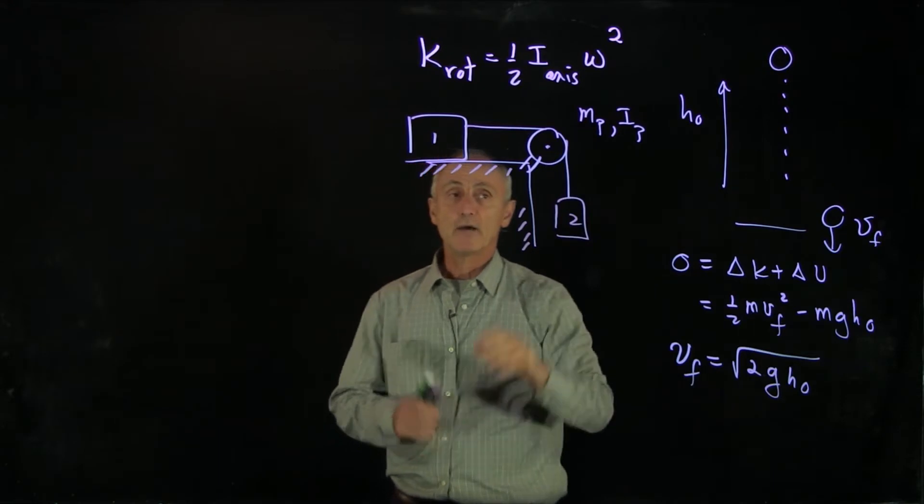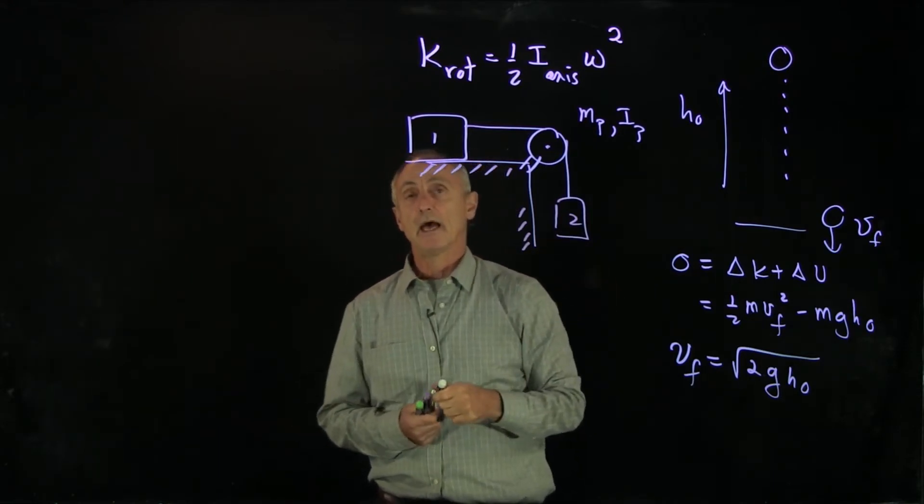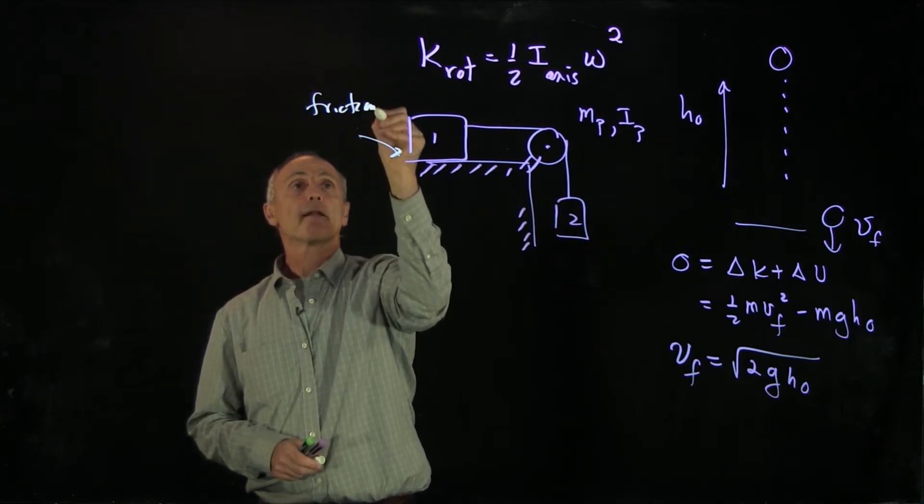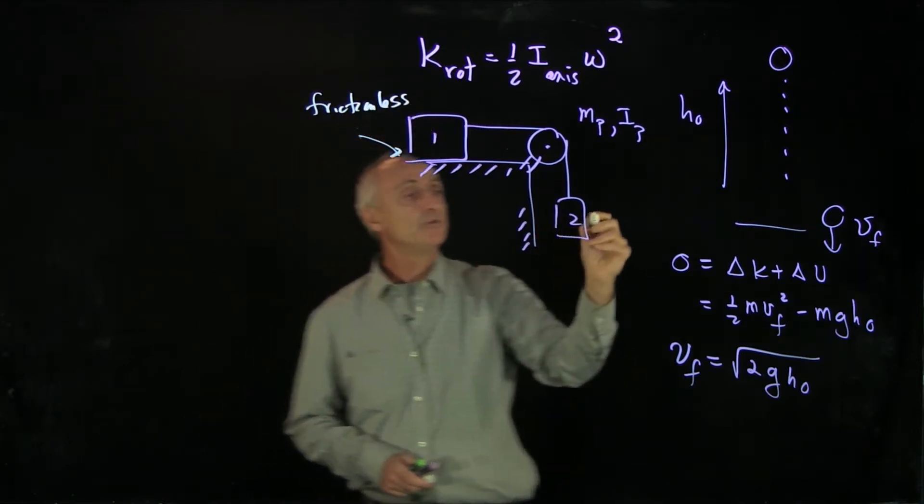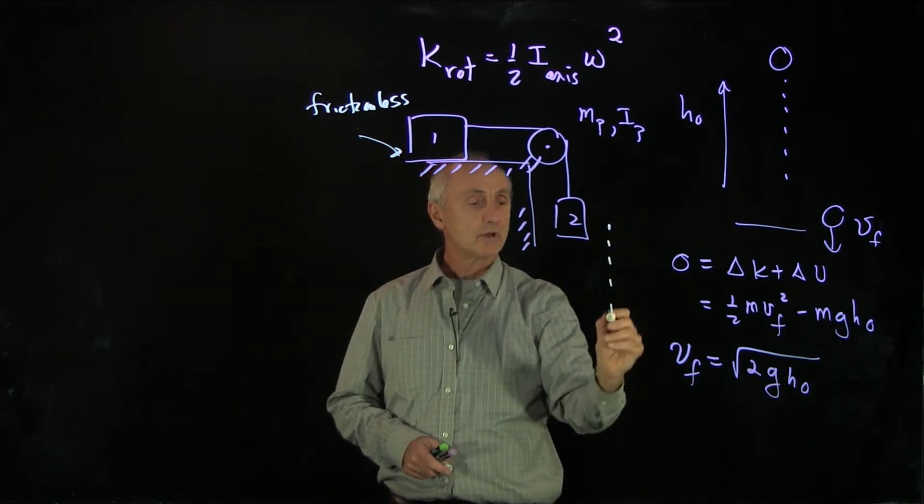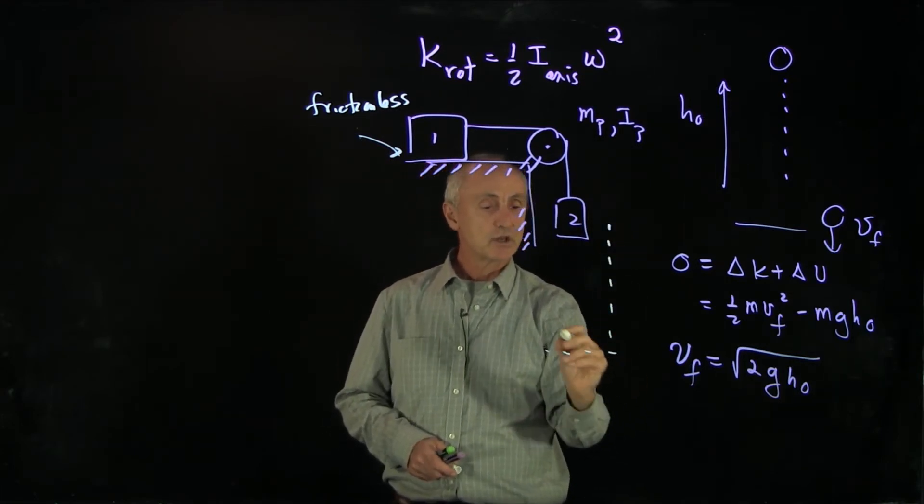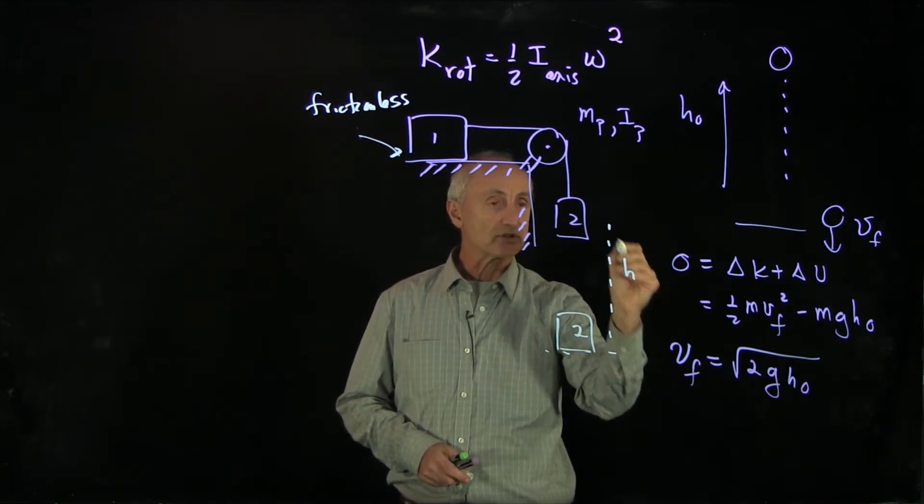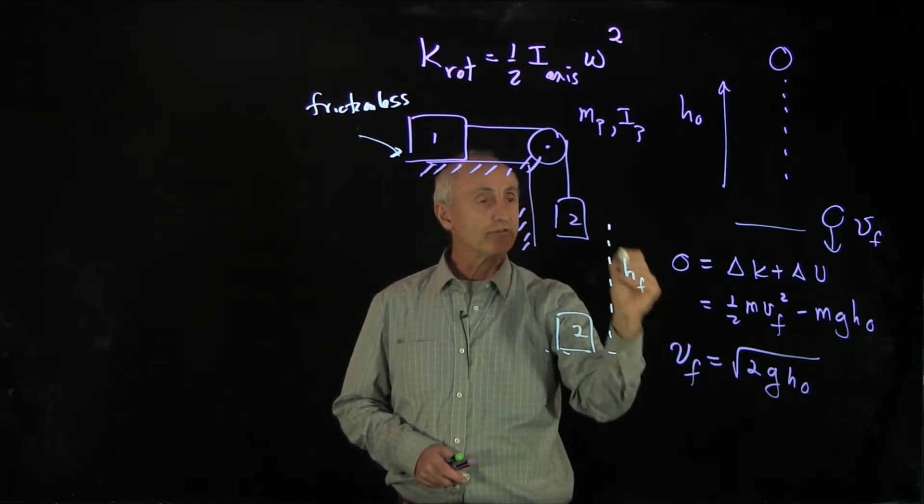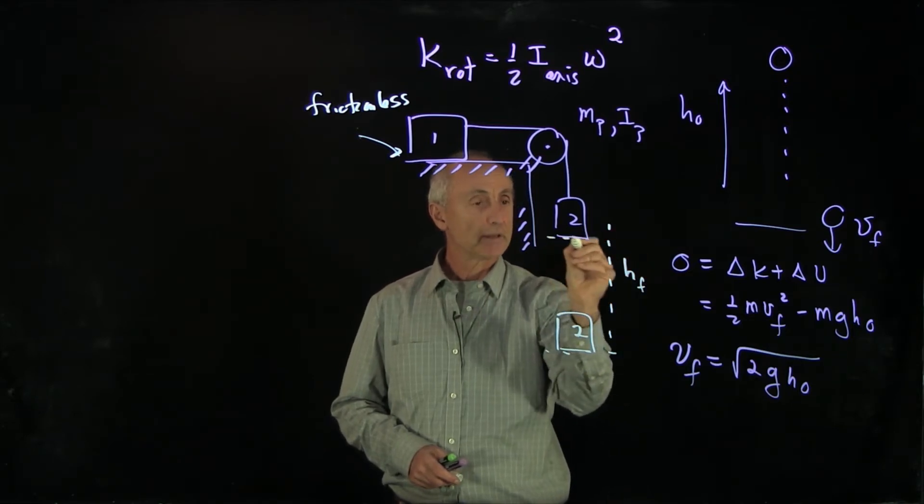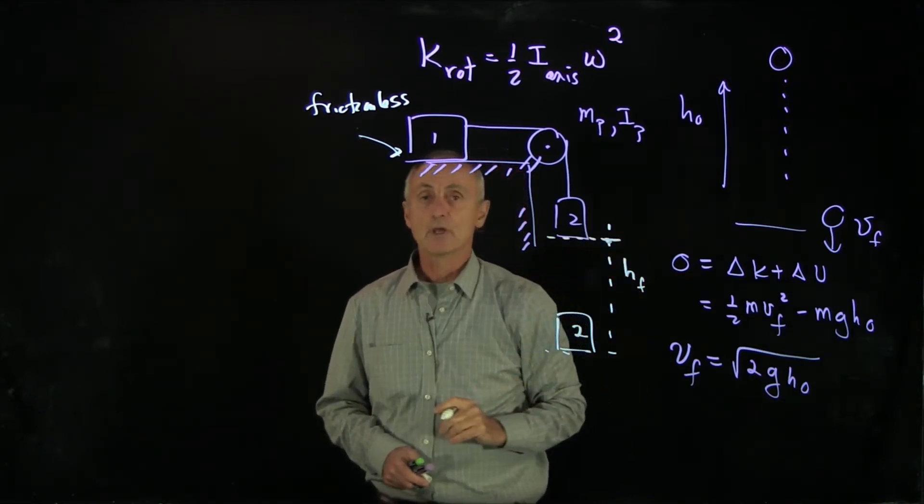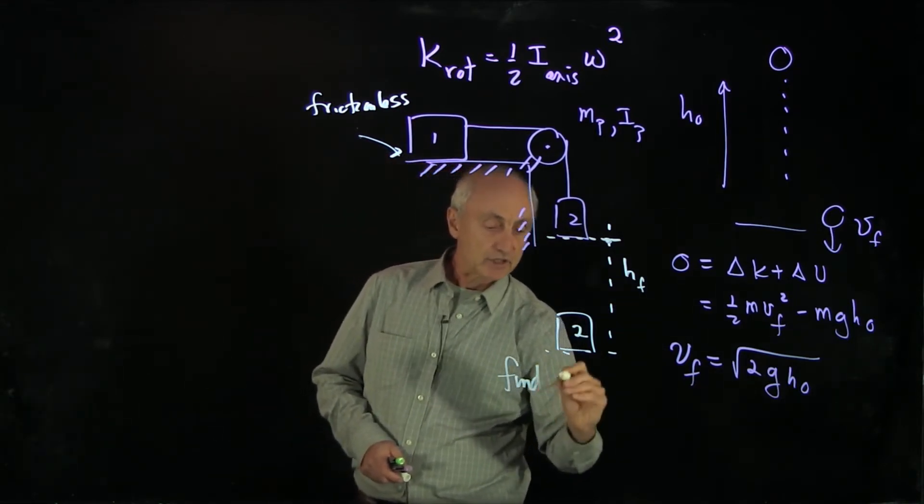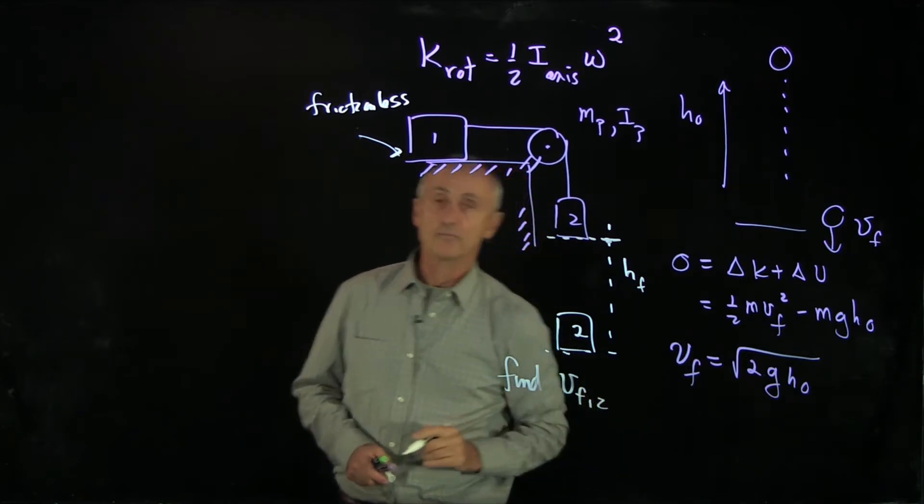Let's suppose that we release this system. For the moment, let's make this surface frictionless. Suppose that block 2 falls down a certain distance. In the final state, block 2 will have dropped the distance h final from its initial position. What we'd like to consider is find the velocity final of block 2.